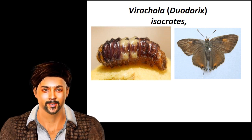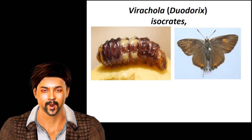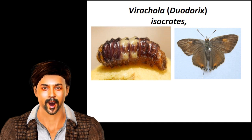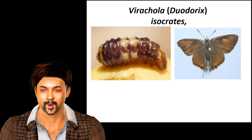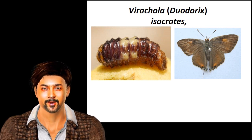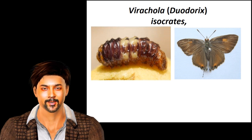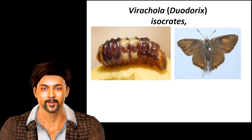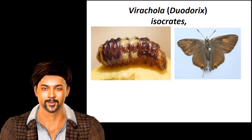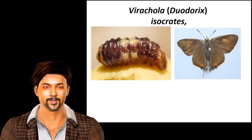Infested fruits are also attacked by bacteria and fungi, which ultimately cause the fruits to fall off with an offensive smell. Eggs are shiny white and oval-shaped, laid singly on the calyx of flowers and on tender fruits. The egg period is about 7 to 10 days, larval period about 18 to 47 days. Caterpillars are dark brown with sharp hairs and white patches all over the body.